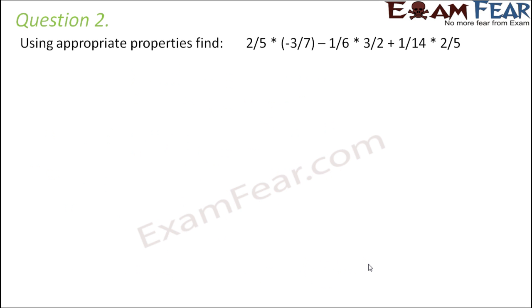So let's look at question number 2. Here again using the properties we will have to solve this. So it is 2 by 5 into minus 3 by 7 minus 1 by 6 into 3 by 2 plus 1 by 14 into 2 by 5.